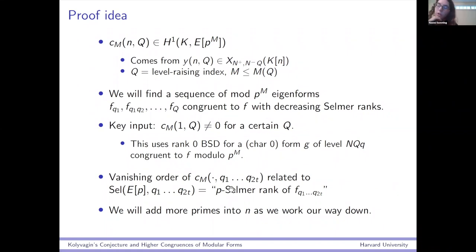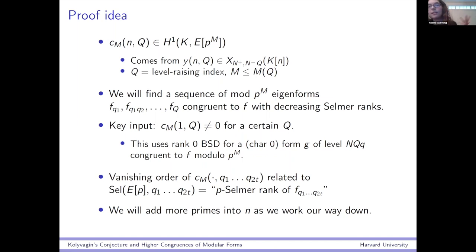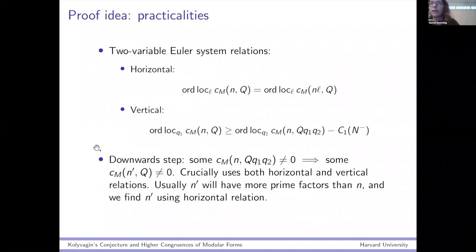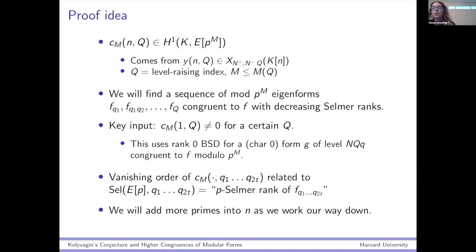The way we get this input is actually not from F_Q but from something even one level higher — from a rank zero form of level NQ·q which is going to be congruent to F. What's really special about this form and very different from these F_Q's is that it has to be characteristic zero. Kolyvagin showed that the vanishing order of his classes — meaning how many primes you have to put into N before they're non-zero — had to do with the Selmer rank. For a fixed Q, the vanishing order is related to a level-raised Selmer rank.